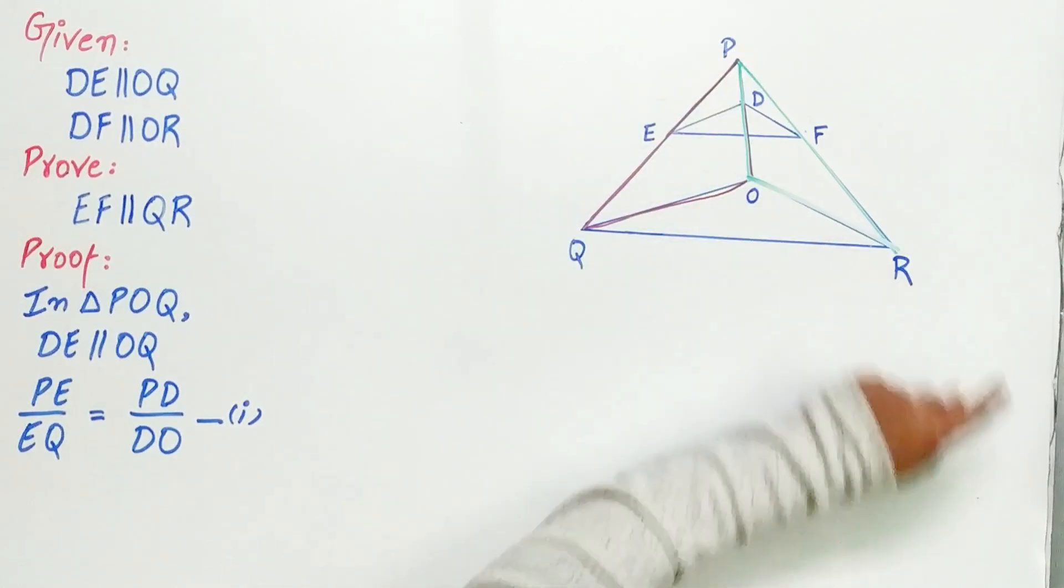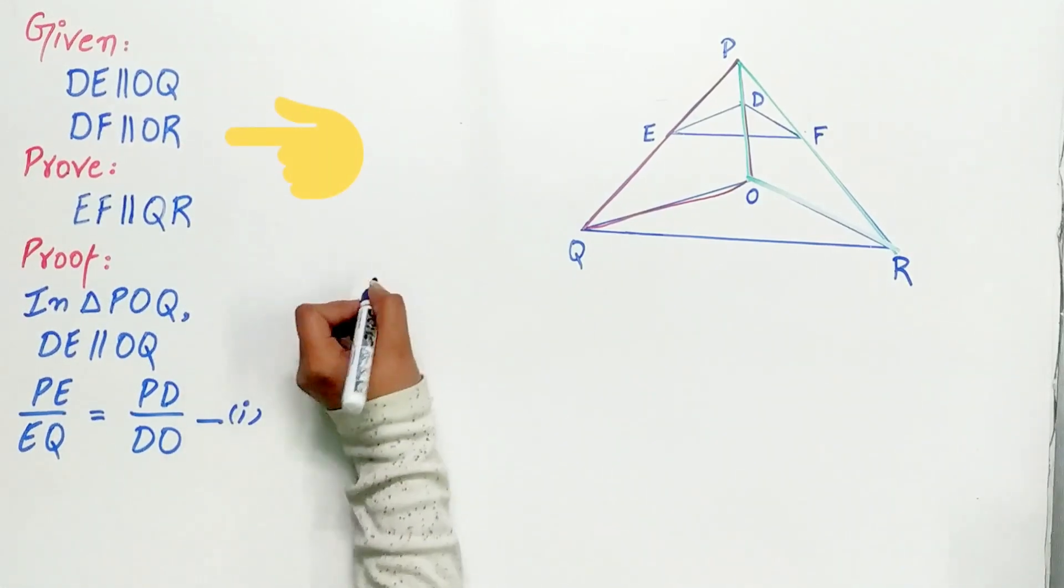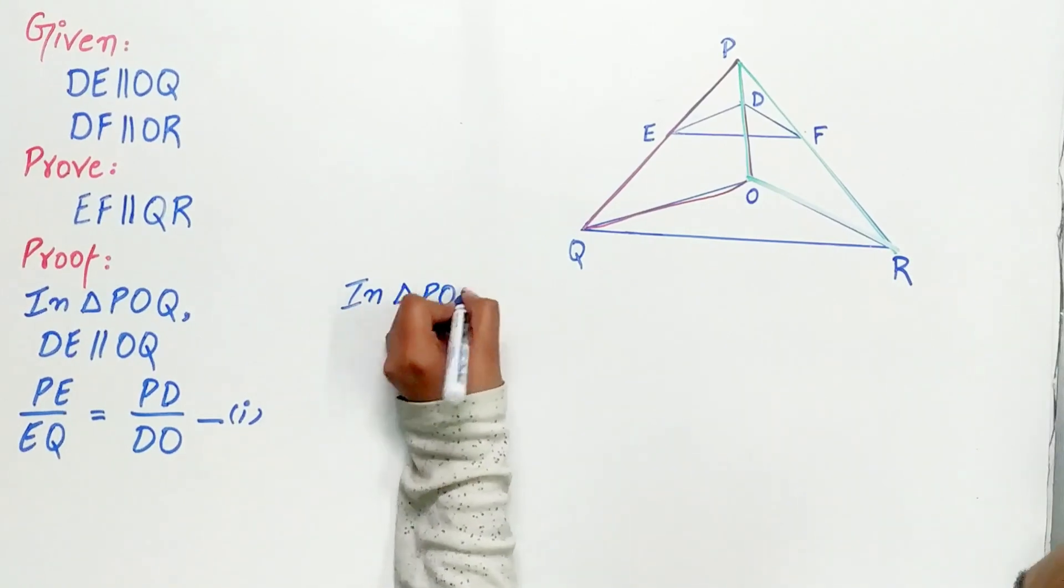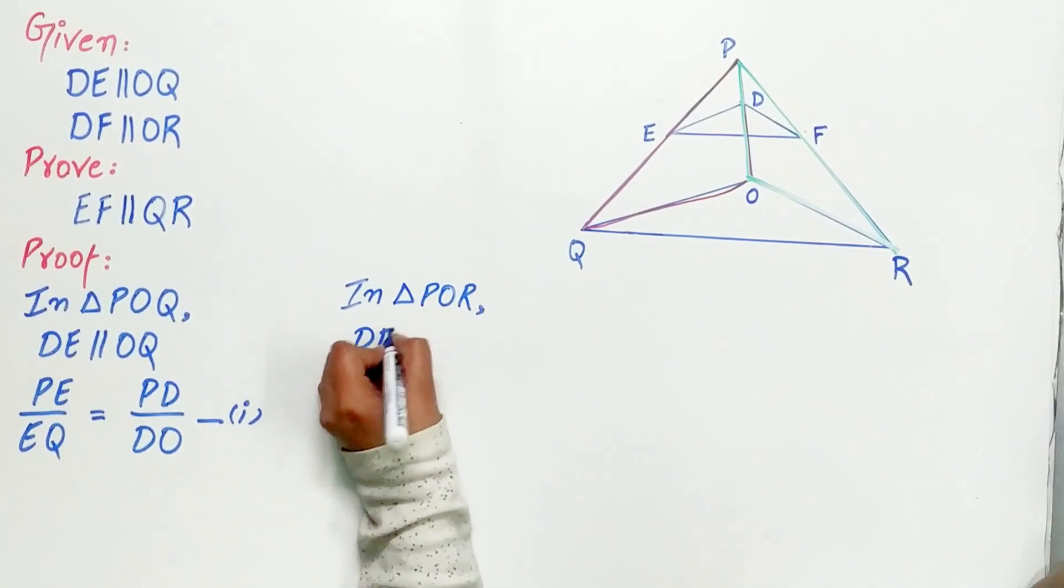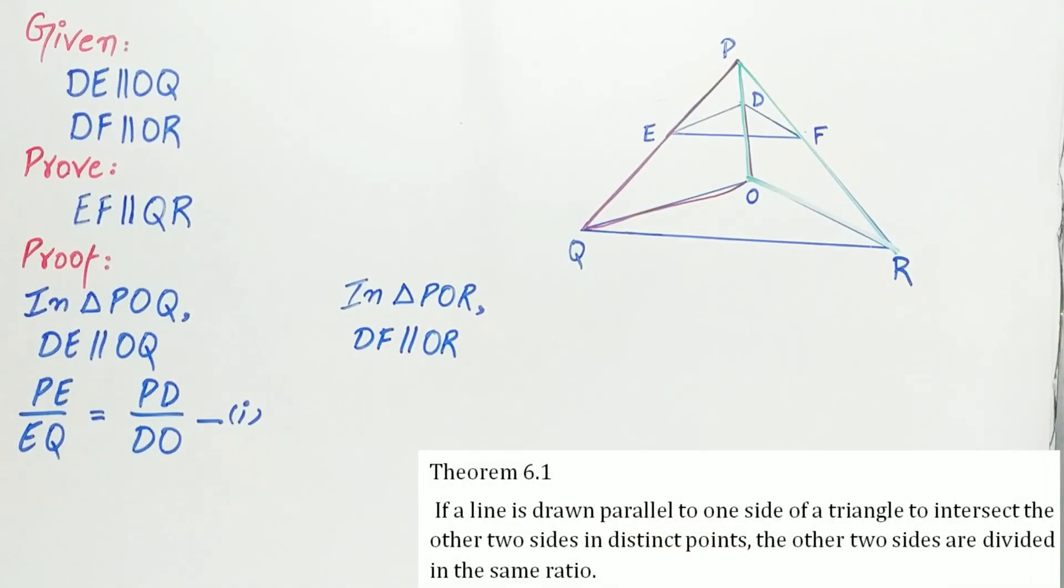Now, POR is another triangle and DF is parallel to OR. That is, given to us. Hence, by theorem 6.1, the other two sides of the triangle are in the same ratio.